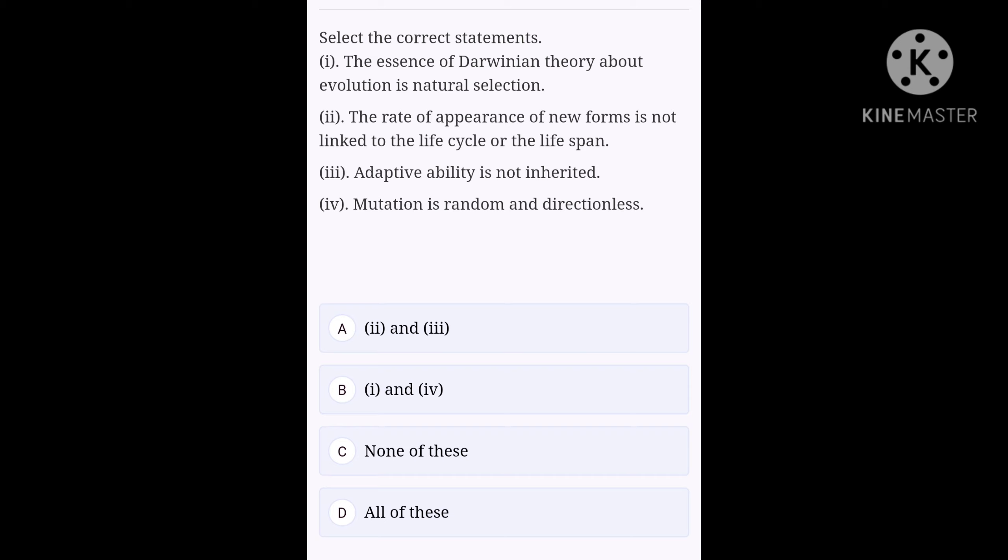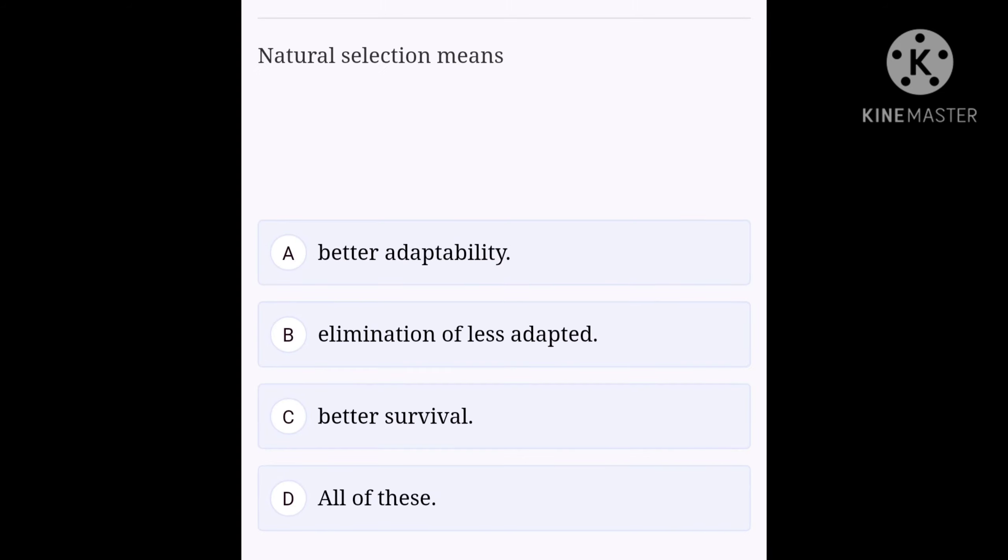Next question. Natural selection means option A: better adaptability, option B: elimination of less adapted, option C: better survival, option D: all of these. The correct answer for this question is D, all of these.